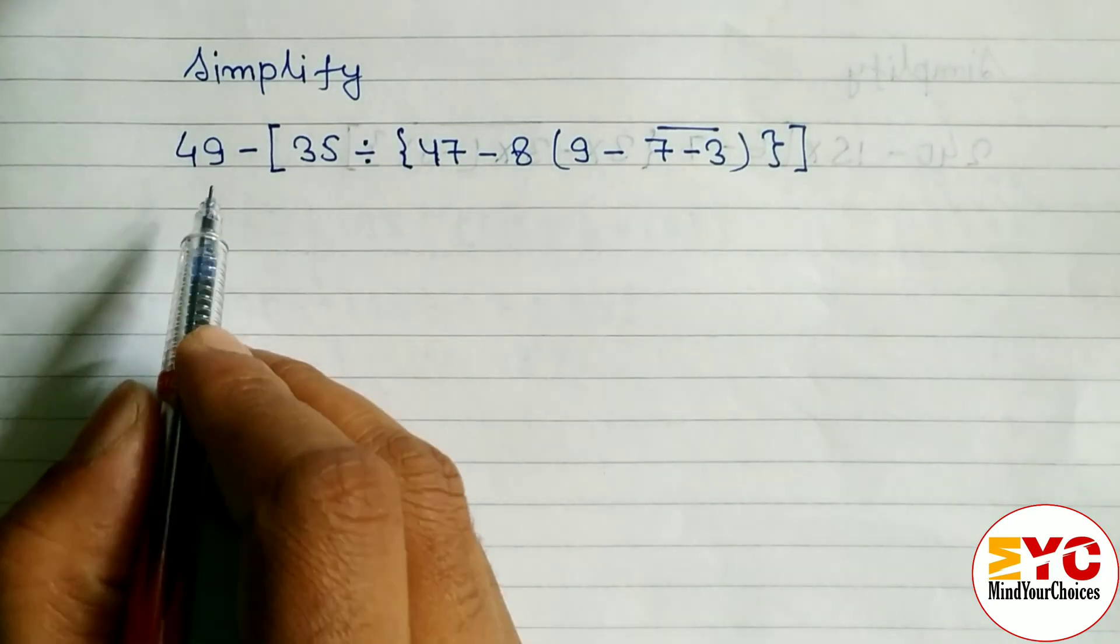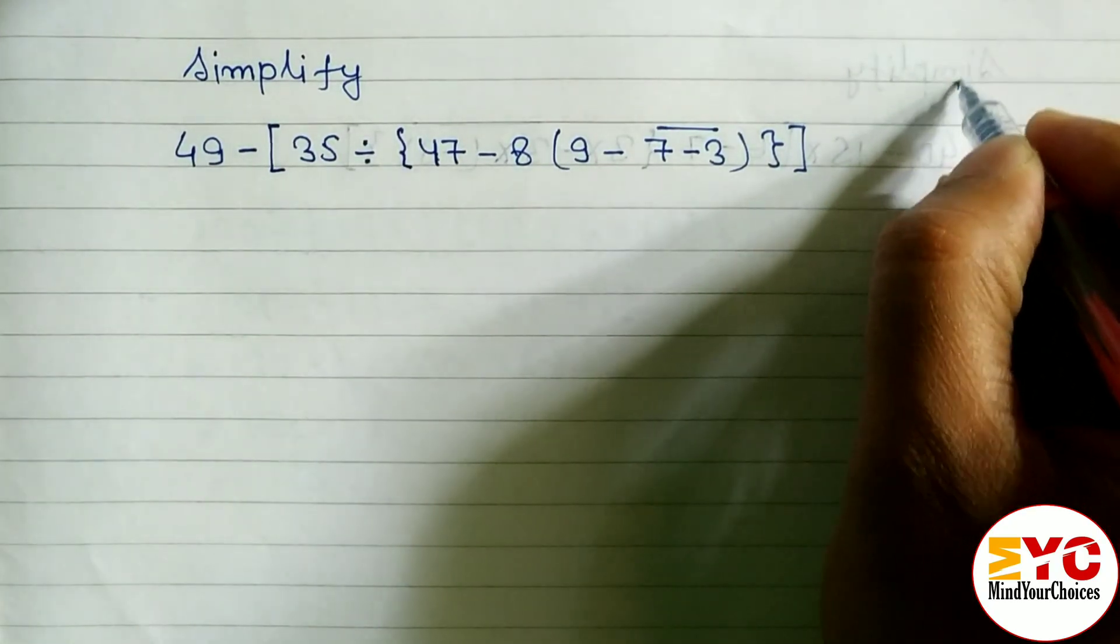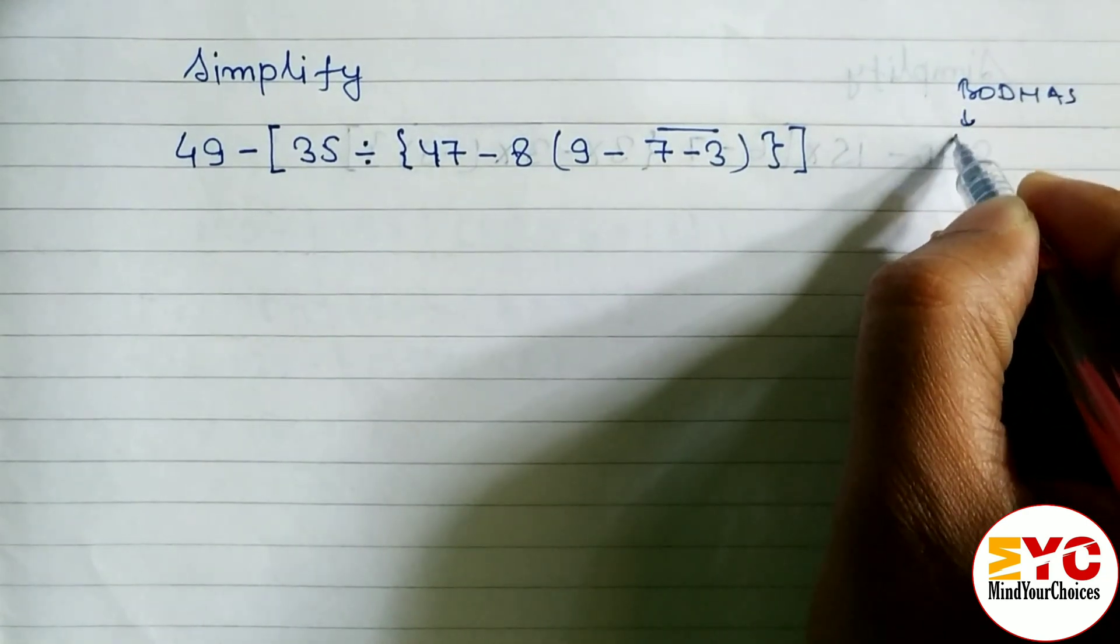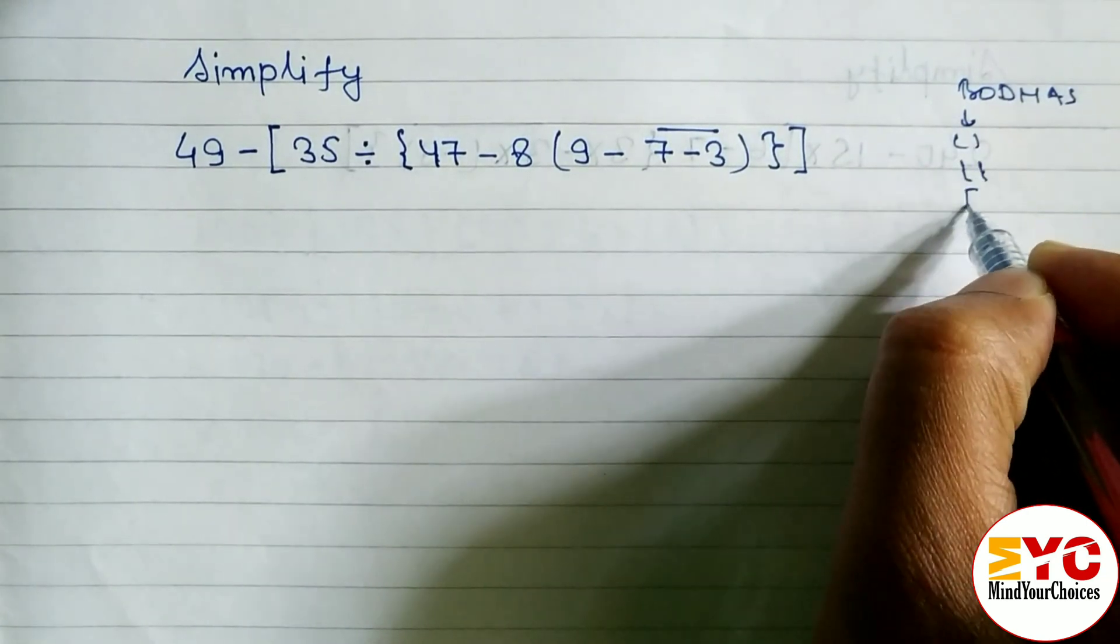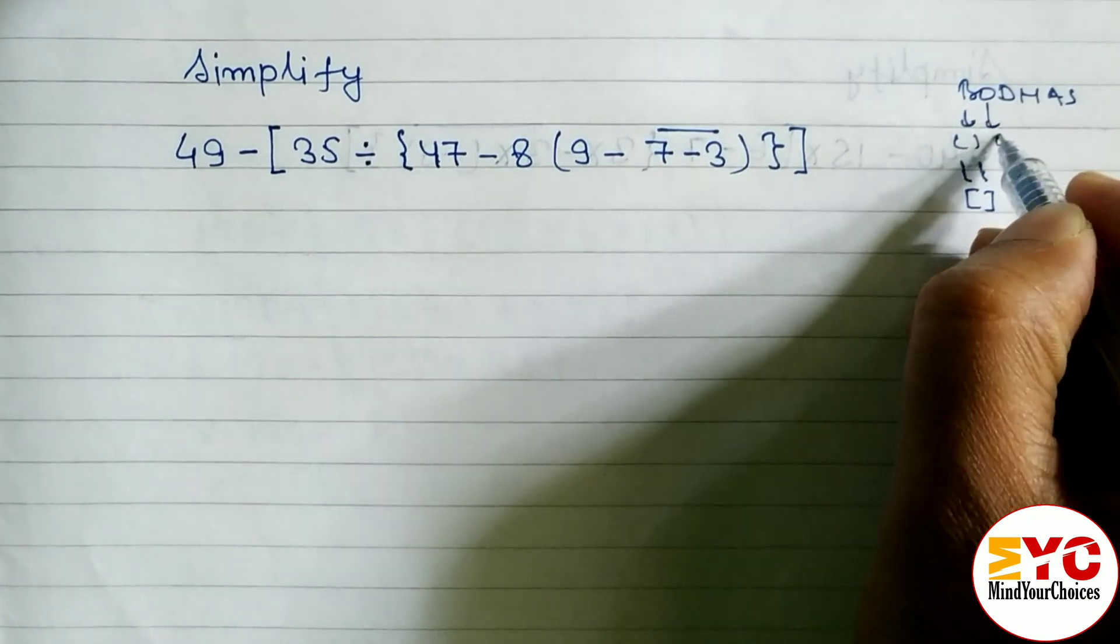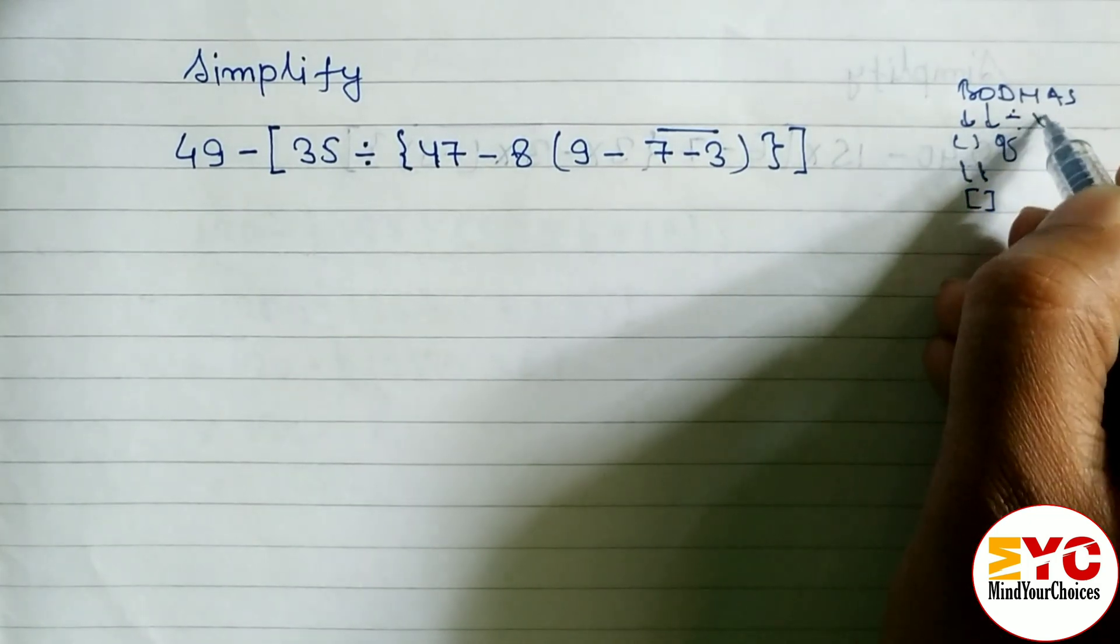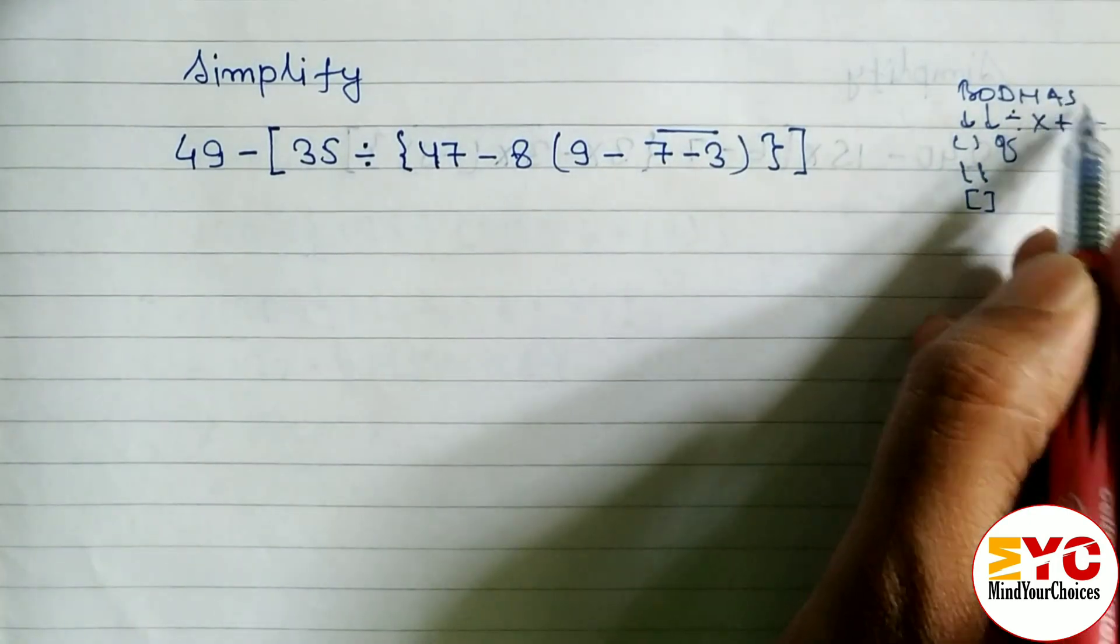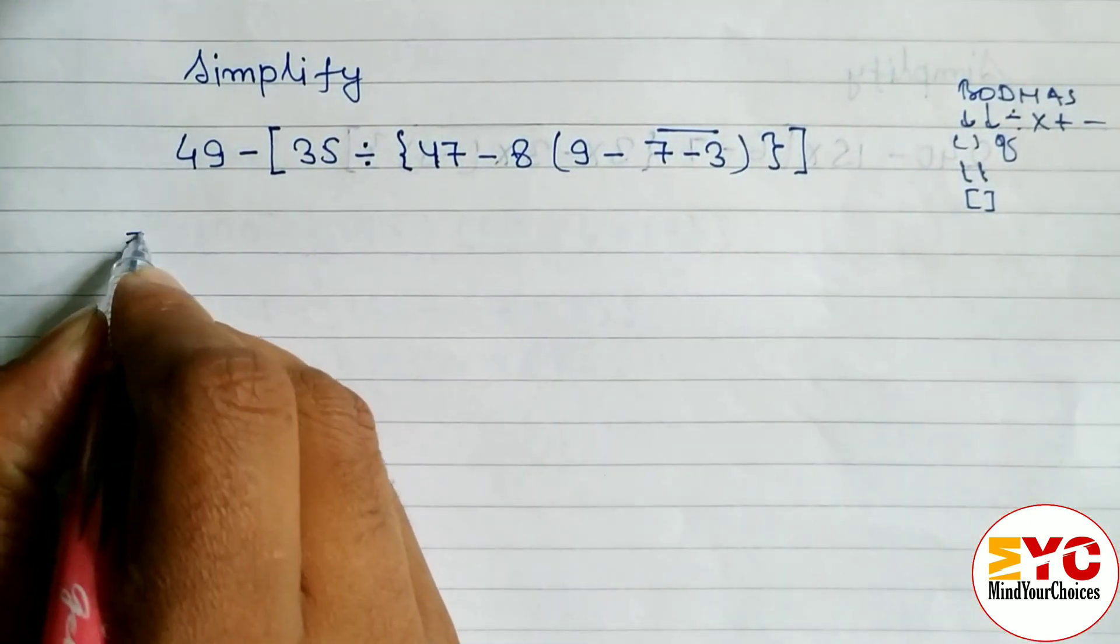In this video we will learn how to simplify by using BODMAS. B means bracket - so first small bracket, then curly bracket, then big bracket. O means of, D means divide, then M multiply, then A addition, and S means subtraction.